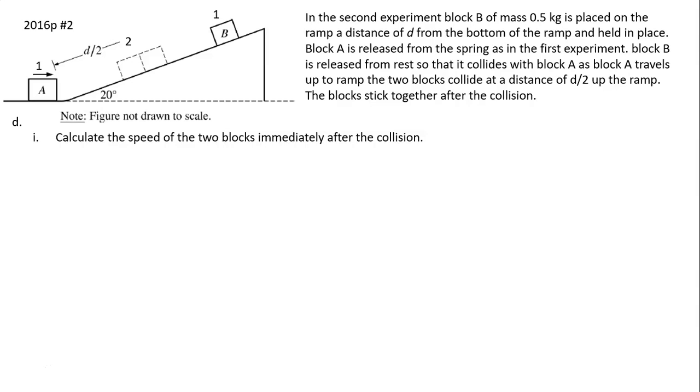Part D: Calculate the speed of the two blocks immediately after collision. Because this is a question of collision, we use conservation of momentum. We have to find v prime. The problem is we don't know the velocity before collision of block A or block B, but we can find that out. Let's consider block A. We know initial velocity, we know acceleration is negative because block A is slowing down, we know the distance, therefore we know half the distance. We can use the timeless equation to find the speed right before collision.